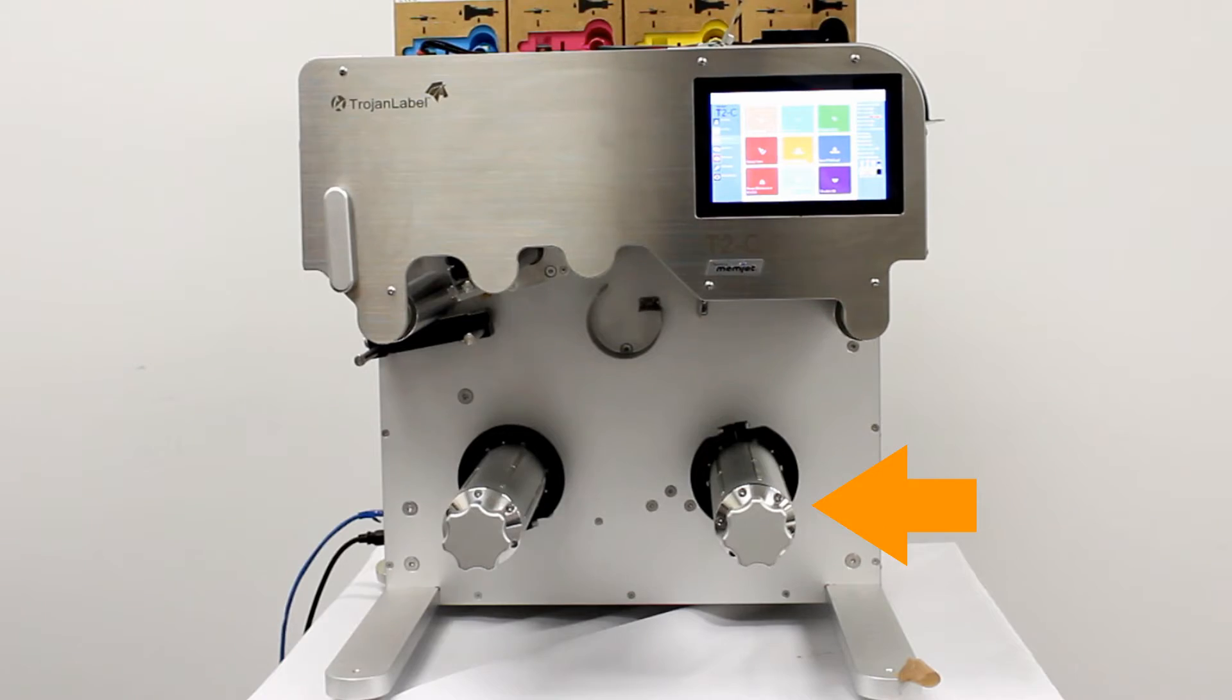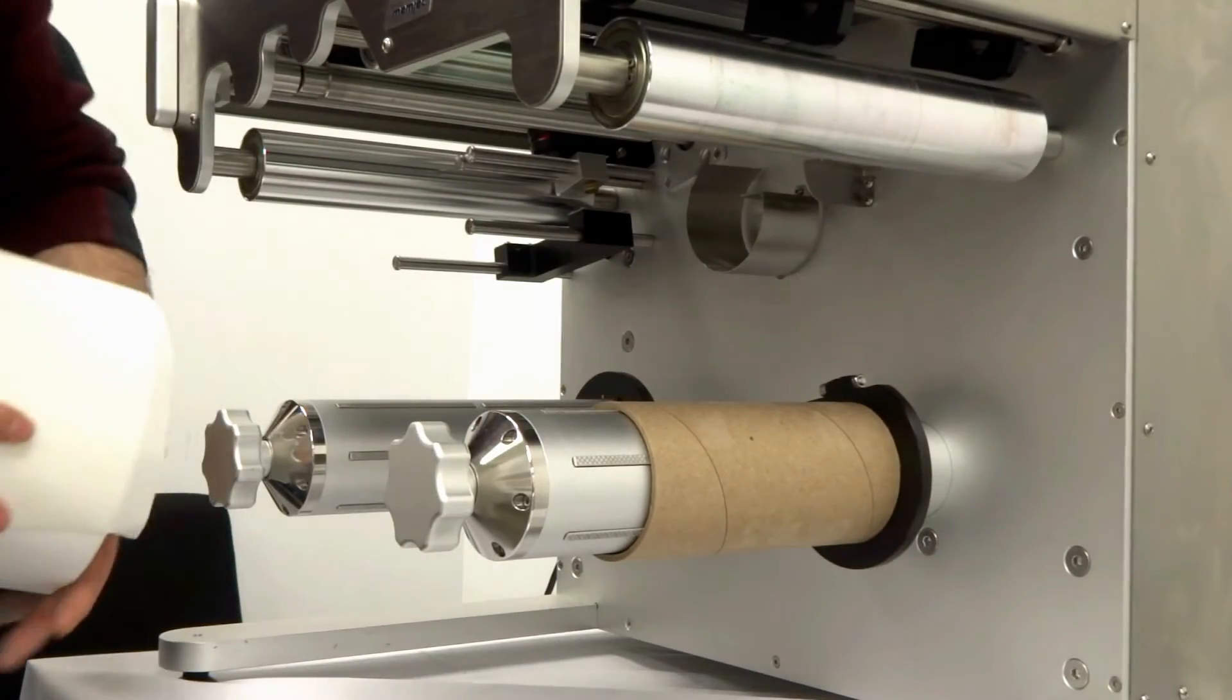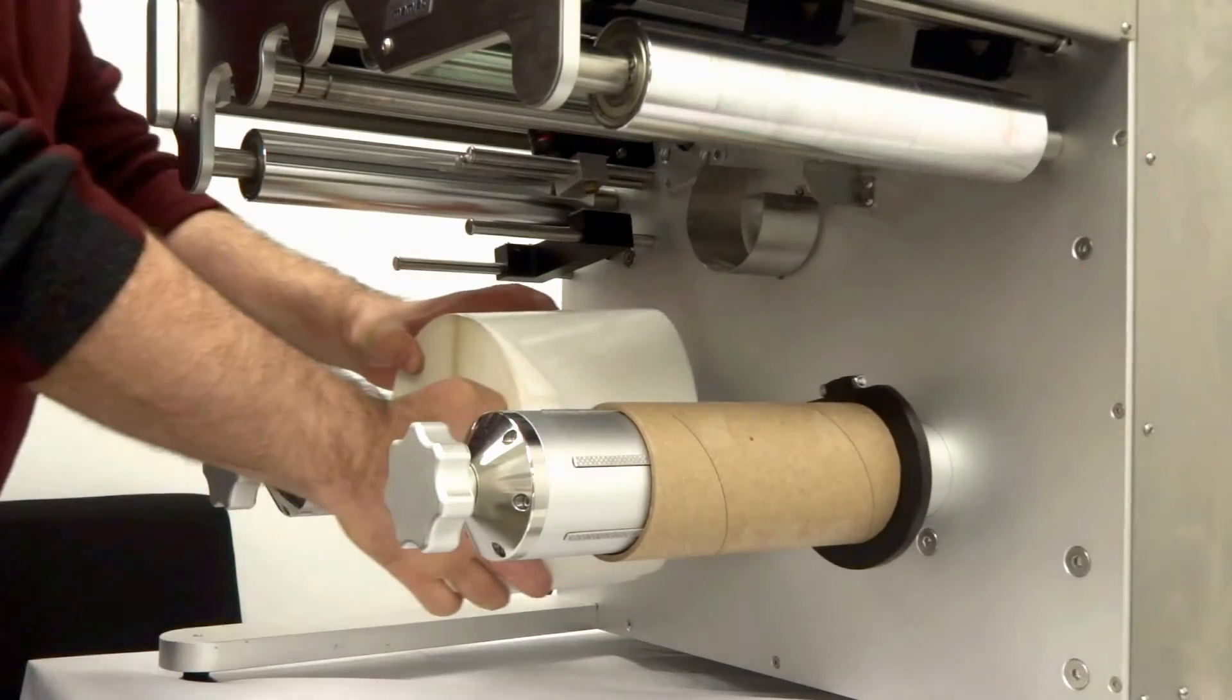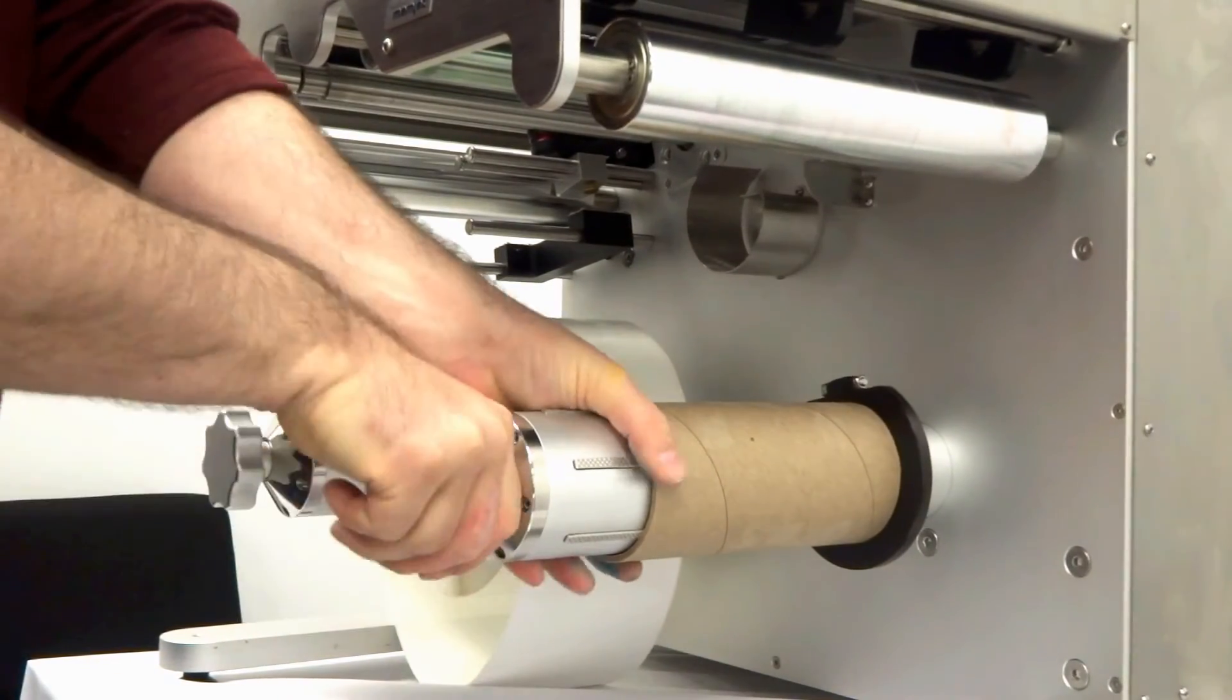Put an empty core on the take-up mandrel. Put the supply media on the unwind mandrel.